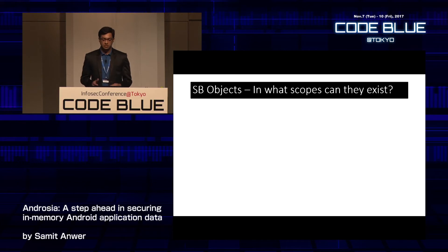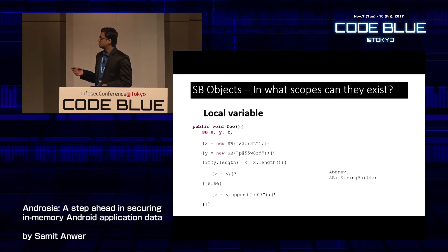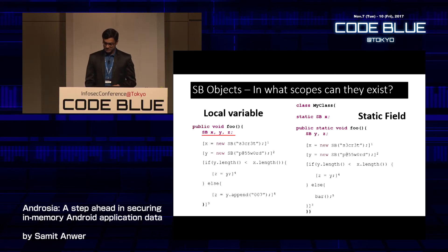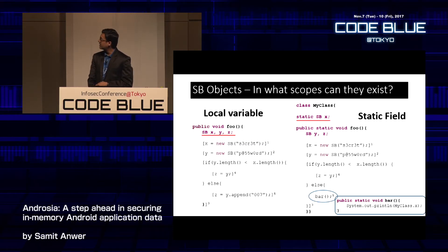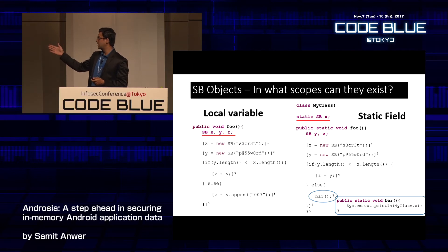Variables can exist in multiple scopes. As local variables, x, y, z of StringBuilder type are defined and used only within method foo. Alternatively, as static fields of a class — for example, a static StringBuilder field of MyClass — the scope increases dramatically: the object can be accessed from across the entire application, not just a single method.